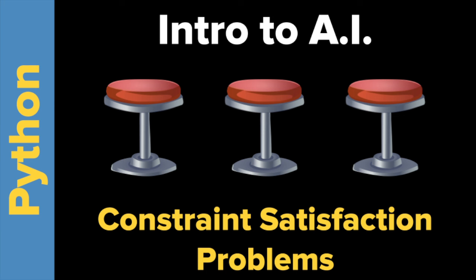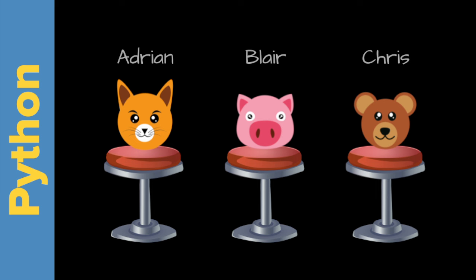Welcome to Intro to AI: Constraint Satisfaction Problems with Tokyo EdTech. Today we're going to take a look at a simple type of constraint satisfaction problem — a seating chart. A constraint satisfaction problem is a problem where you have lots of different possible solutions to whatever it is, and there are some constraints, some limitations to which ones are acceptable. So in this case, we're looking at a seating chart for three people, and we'll add a few more later. We have Adrian, Blair, and Chris, seated at a conference, and we have to figure out which seating arrangements are acceptable.